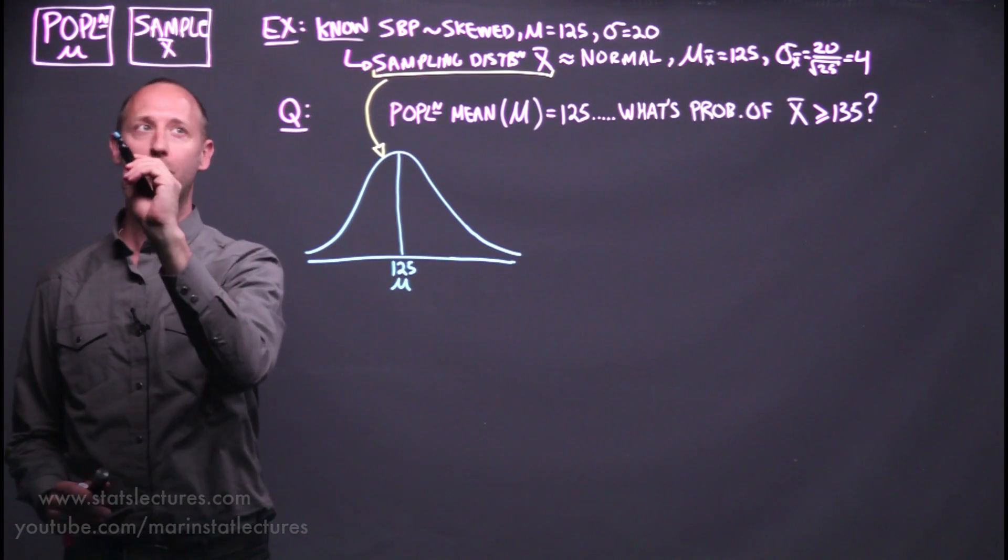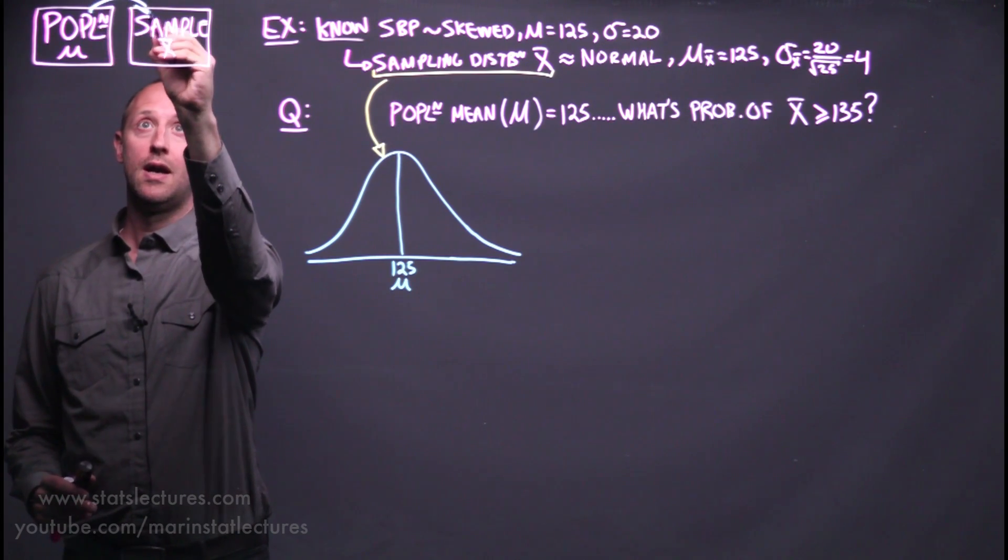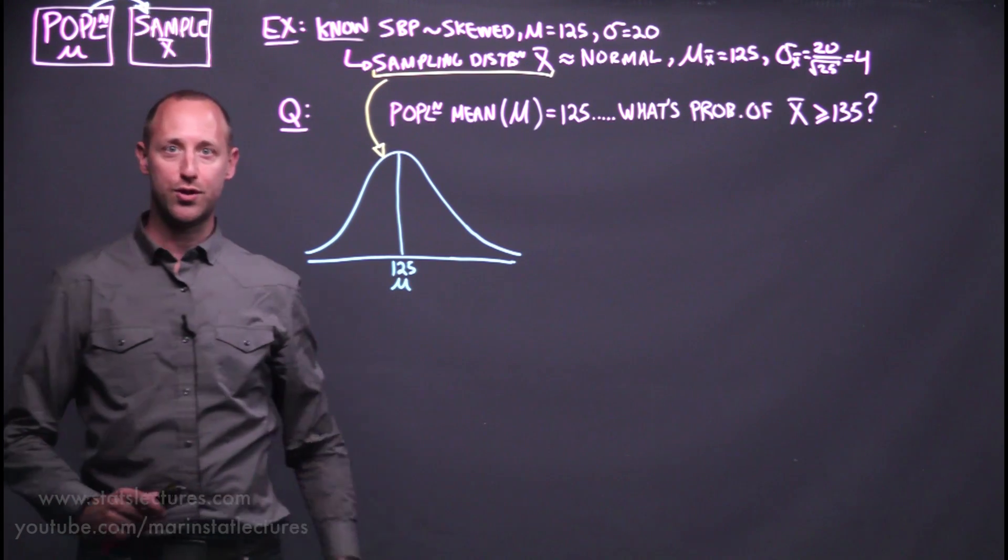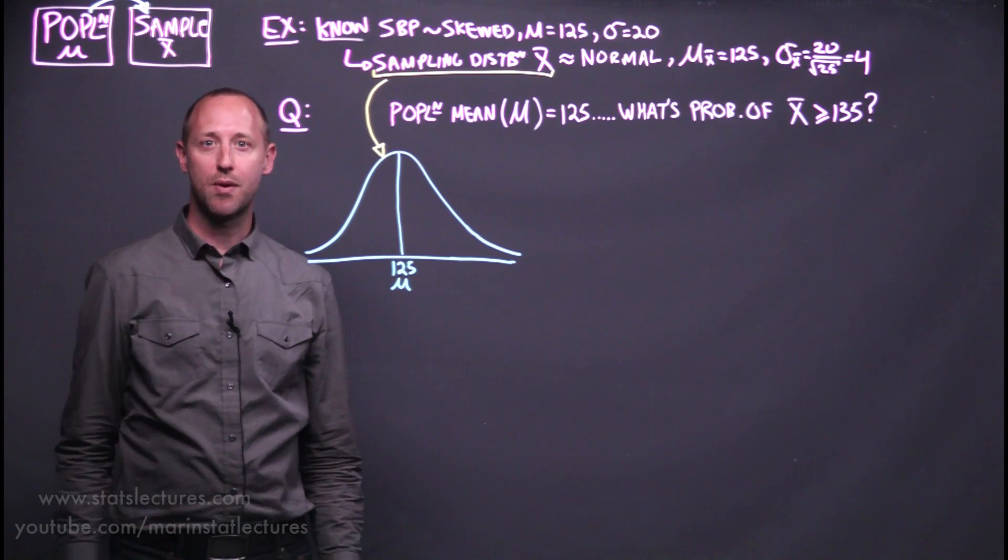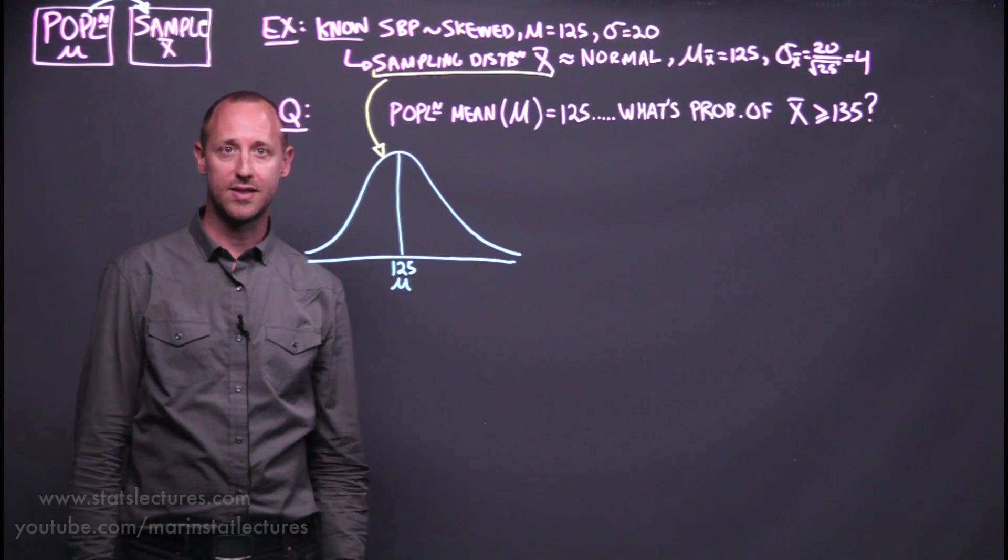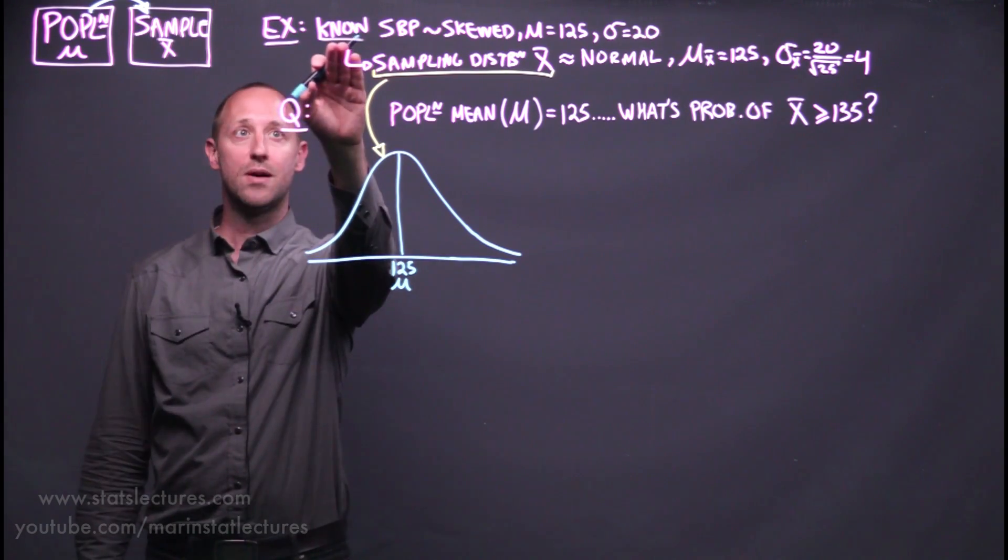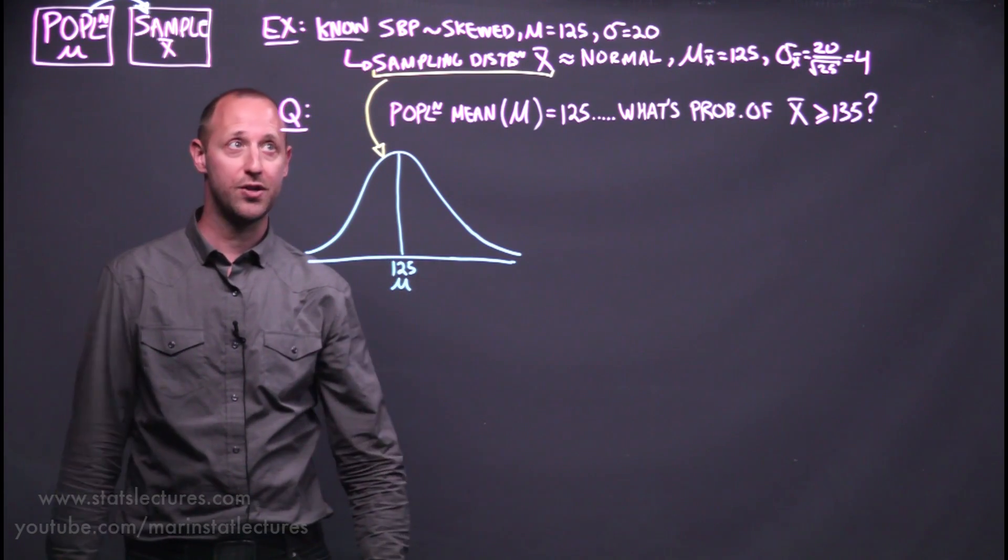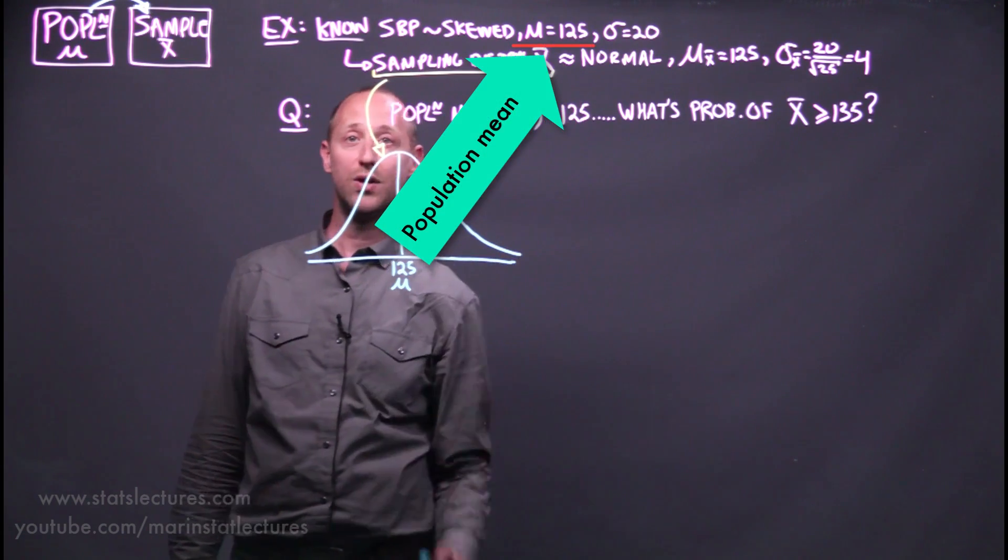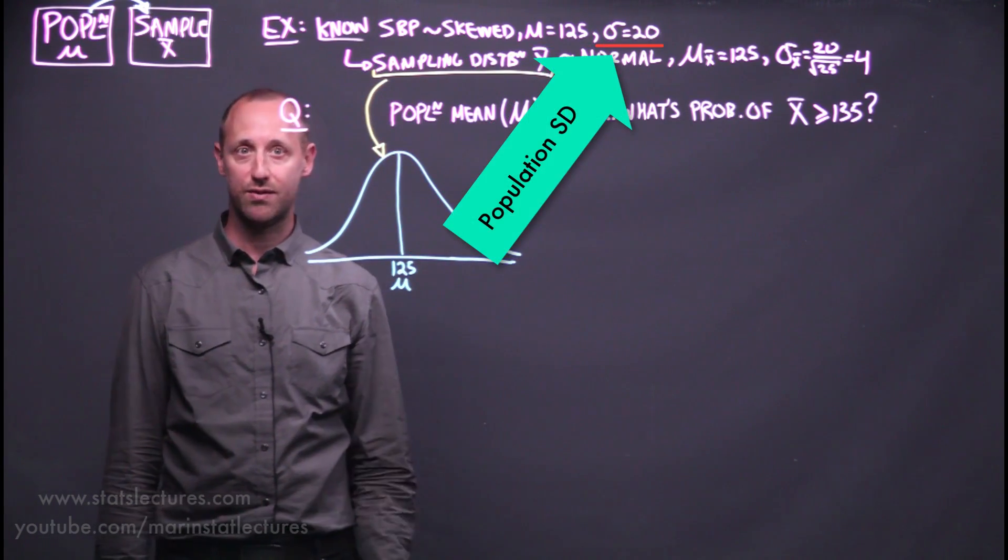Remember we learned about the sampling distribution, which helps describe if we know the truth for a population, what's the probability of certain things showing up when we collect a sample of data. Let's take a look at this example. Suppose that we know the systolic blood pressure in a population is skewed with a mean of 125 and a standard deviation of 20.